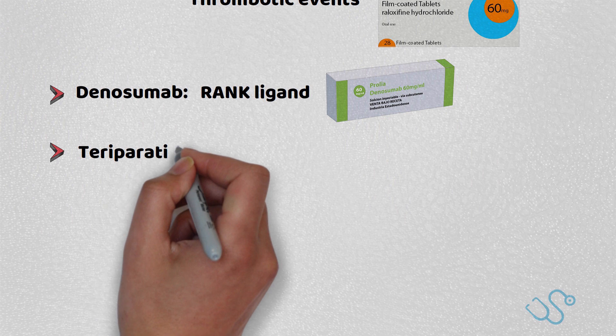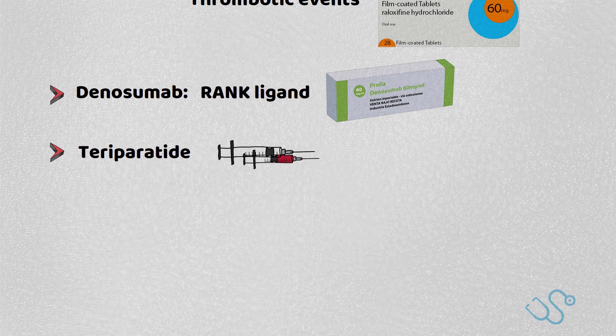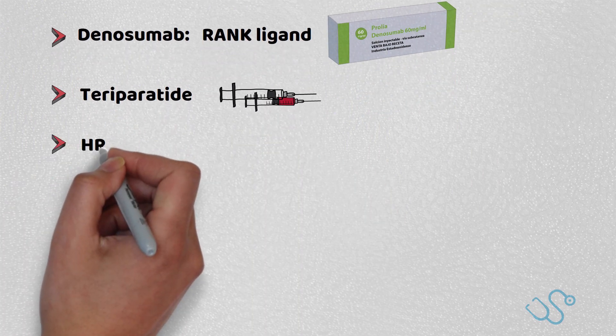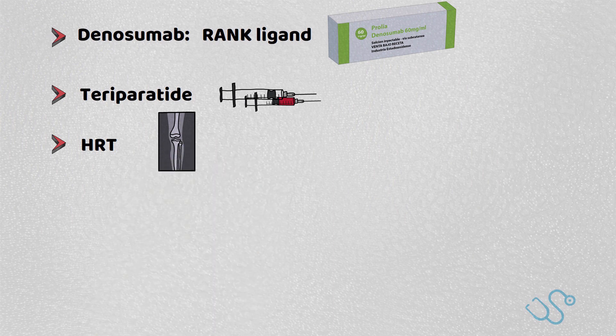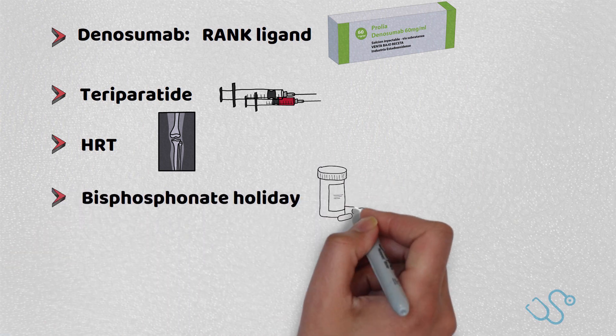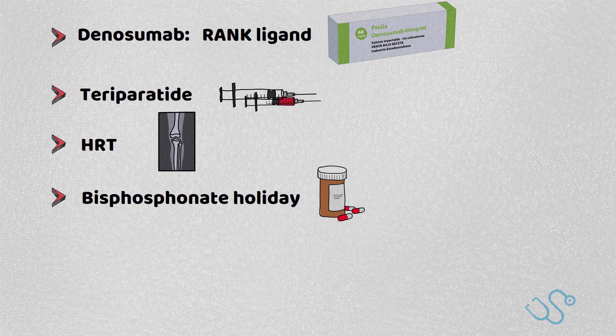There are alternatives such as teriparatide, which is a variant of the parathyroid hormone, and HRT, which can be considered particularly if there are additional vasomotor symptoms in peri- and post-menopausal women, but patients need to be counselled about that separately. With regards to treatment, patients are usually advised for a review after five years, where a bisphosphonate holiday may be considered, which in turn may lead to reassessment of fracture risk.